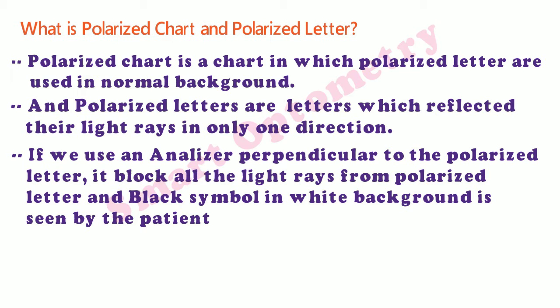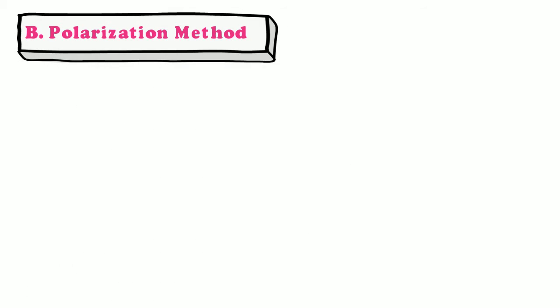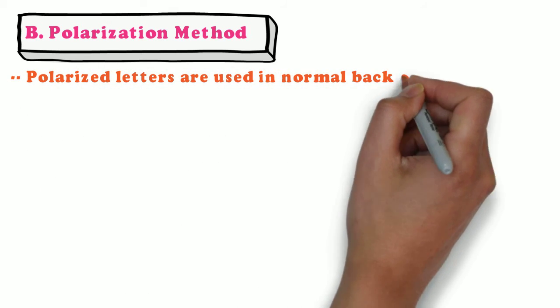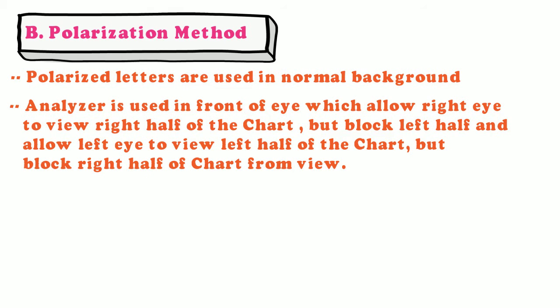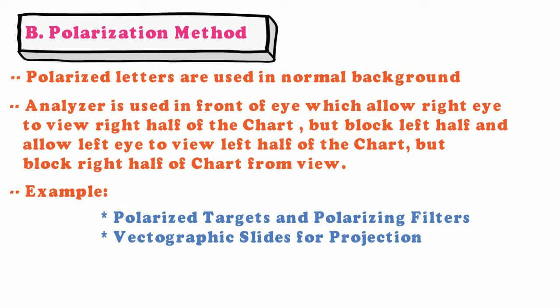Now let's study about the polarization method of binocular subjective refraction. In this method, polarized letters are used in a normal background. An analyzer is used in front of the eye which allows the right eye to view the right half of the chart but blocks the left half, and allows the left eye to view the left half of the chart but blocks the right half.